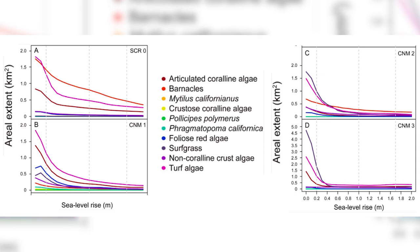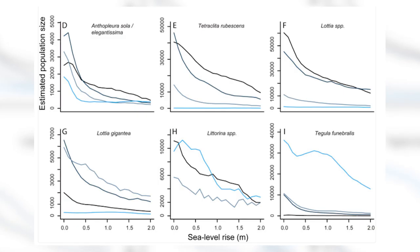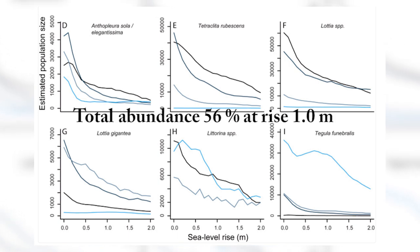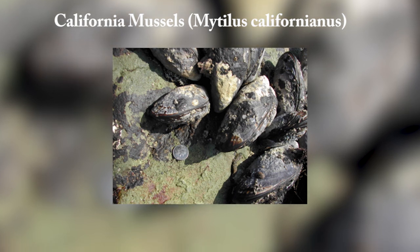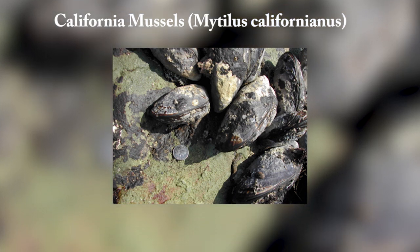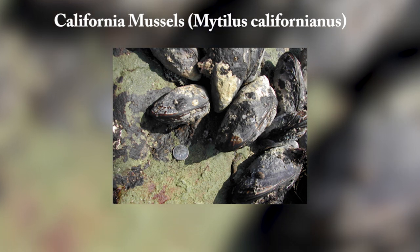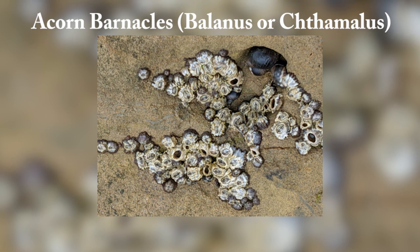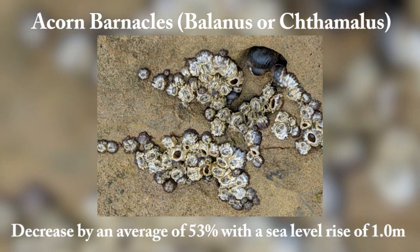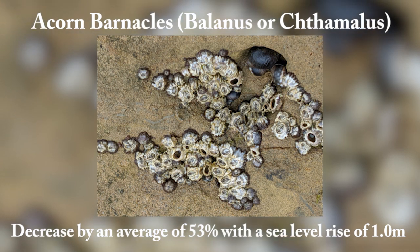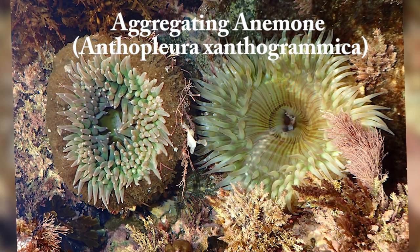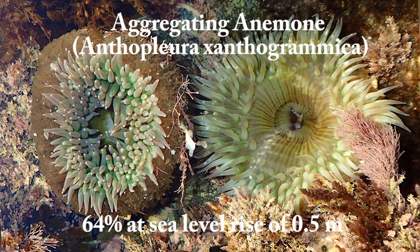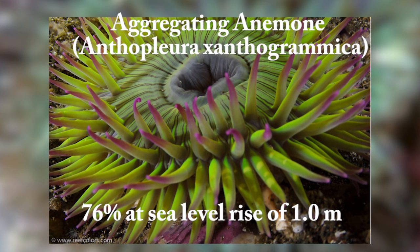When it comes to the invertebrates found at the four sites, the model shows that the total abundance of all invertebrates will decrease by around 56% at a sea level rise of one metre, and 67% at 1.7 metres. The change is expected to be less dramatic for taxa occupying primarily the upper intertidal habitat, such as mussels and barnacles — for example, barnacles are estimated to decrease by an average of 53% at one metre of sea level rise. For those in the low intertidal zone, such as green anemones, the loss will be much greater: an average of 64% at 0.5 metres and 76% at one metre of sea level rise.